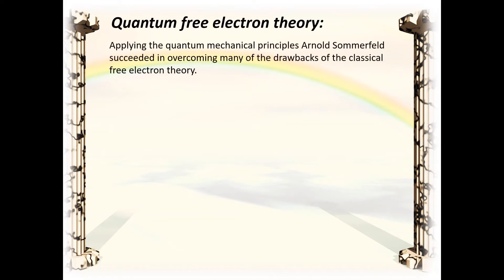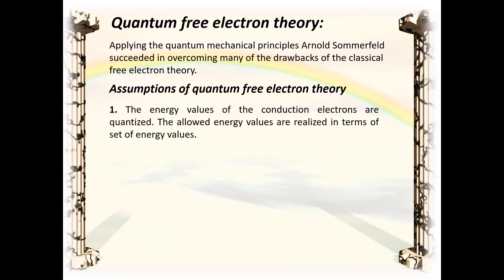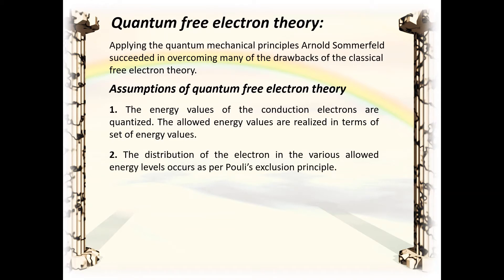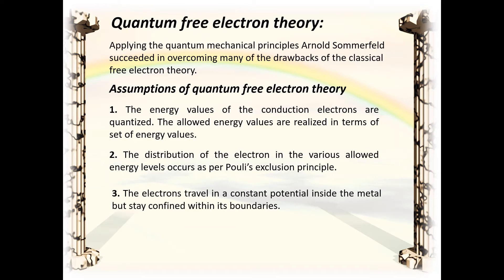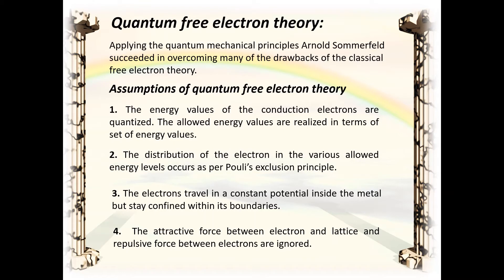Quantum free electron theory: Applying quantum mechanical principles, Arnold Sommerfeld succeeded in overcoming many of the drawbacks of classical free electron theory. The assumptions are: First, the energy values of conduction electrons are quantized, realized as a set of allowed energy values. Second, distribution of electrons in the allowed energy levels occurs as per Pauli's exclusion principle — no two electrons will have the same quantum number. Third, electrons travel in a constant potential inside the metal but stay confined within its boundaries. Fourth, the attractive force between electron and lattice and the repulsive force between electrons are ignored.